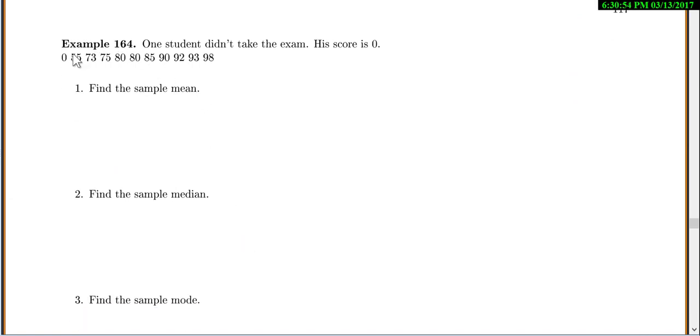So let's try it again. This is the same data set. But one student didn't take the exam, and his score is 0. Now this happens all the time when you guys take exams, and someone skips it, and I go to find the average in Excel, and my average is much lower than it should be because there's a 0 in there. So let's see what adding the 0 in actually does. Find the sample mean. So I'm going to add them all up, and divide by how many there are. In this case, we added one more student, so we now have 11. So we still have 821 divided by 11, gives me 74.63.